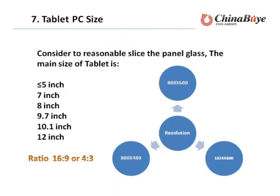Tablet PC screen sizes to consider: the main sizes of Tablet PC are 5 inches, 7 inches, 8 inches, 9.7 inches, 10.1 inches, and 12 inches. The aspect ratio is 16:9 or 4:3.